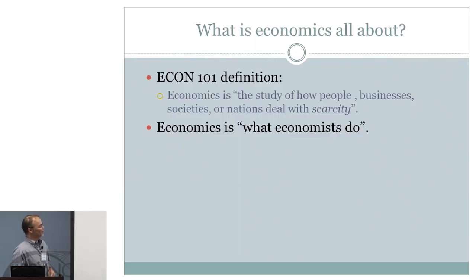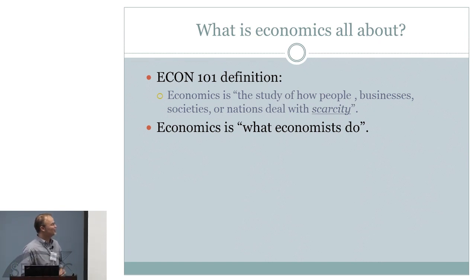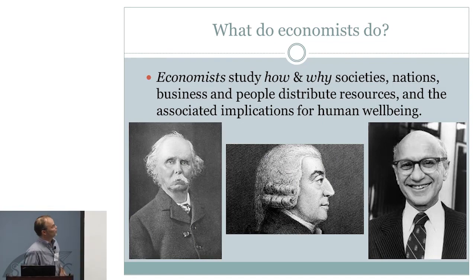The Econ 101 definition: economics is the study of how people, businesses, societies, or nations deal with scarcity. There are lots of definitions — if you ask ten different economists what they do, they'd give you ten different answers. My favorite definition is that economics is what economists do. And if we go back to the first slide, I'm pretty much done — I'll open it up for questions. No, I'm just kidding. What do economists do? We study how people deal with scarcity and how we distribute resources.